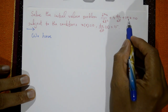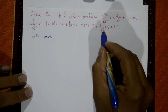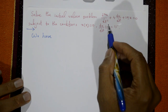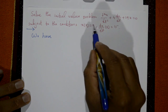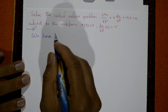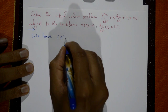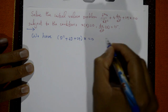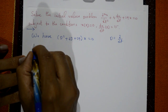Solve the initial value problem: d²x/dt² + 4 dx/dt + 29x = 0, subject to x(0) = 0 and dx/dt at t=0 equal to 15. Here t is the independent variable. Write in operator form: (D² + 4D + 29)x = 0, where D stands for d/dt.